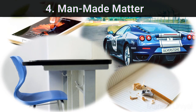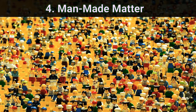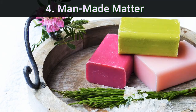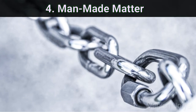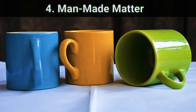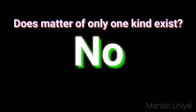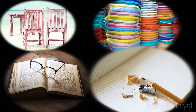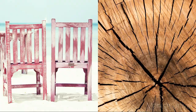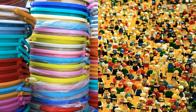Man-made matter is produced artificially from natural matter. Examples include plastic, soaps, detergents, medicines, glass, nylon, steel, ceramic, etc. Different substances are made up of different kinds of matter. For example, a chair is made up of wood, a bucket is made up of plastic, a book is made up of paper, etc.